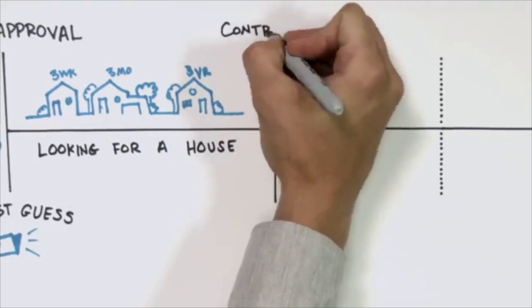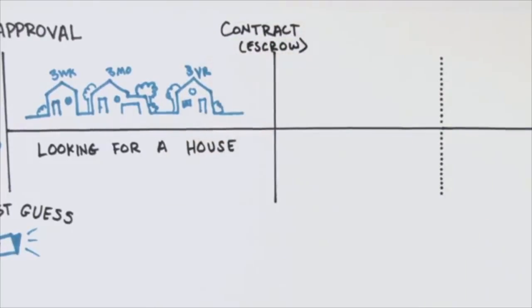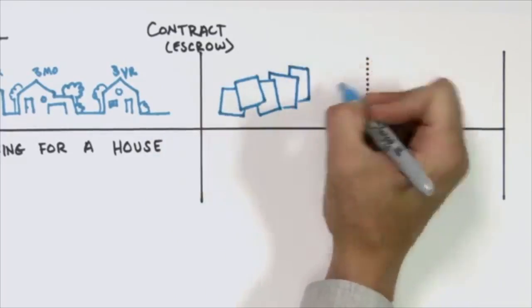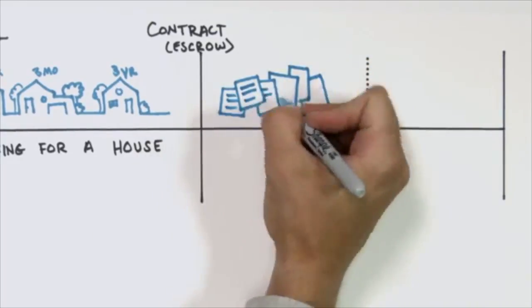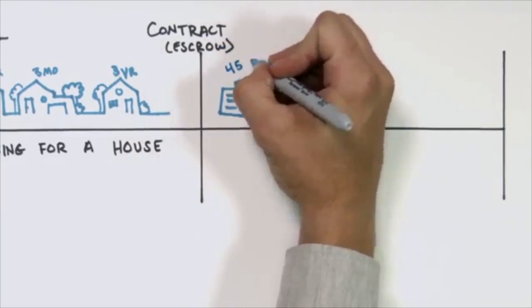And finally once they get into escrow, the lender starts to do their job, springs into action, and starts doing all the heavy lifting. They order the 4506T to make sure the IRS transcripts come in to make sure the tax returns are legitimate. They finally verify the down payment.